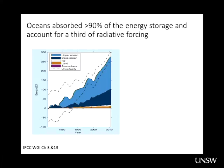In the Fifth Assessment Report, we pulled together — perhaps for the first time — a full energy balance observational estimate of the Earth system's energy balance, through both the oceans chapter, the radiative forcing chapter, and the sea level chapter. This shows the total heat uptake by the climate system from 1970 to the present.